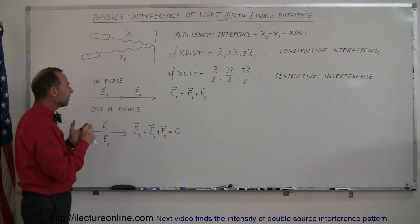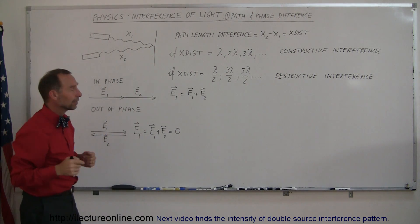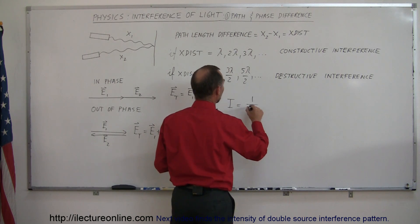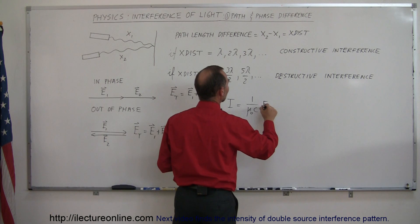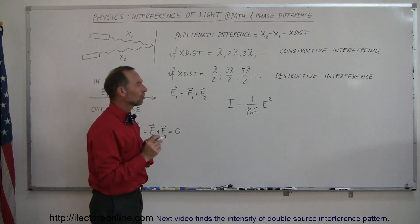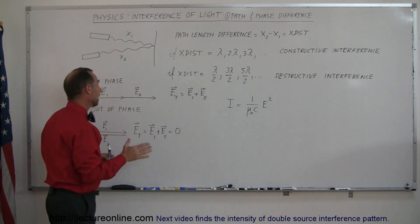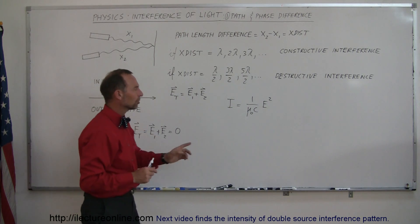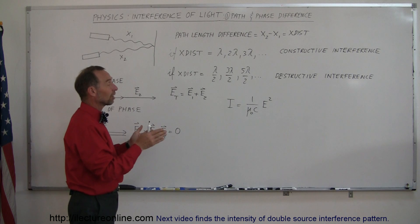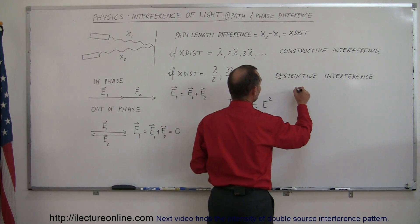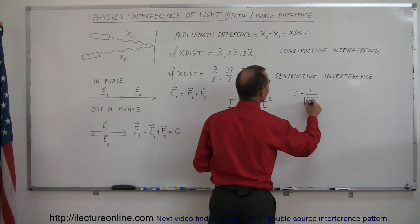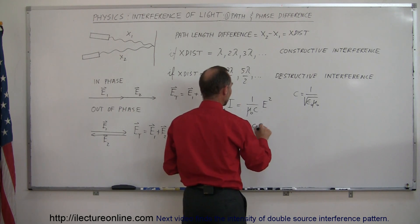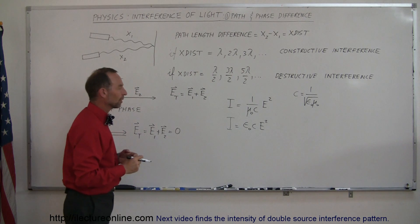So how do we find the intensity of the two beams as they come together? The intensity of light is equal to the magnitude of the Poynting vector, which can be written as one over μ₀C times the electric field oscillation squared. When we talk about electric field oscillations here, we use the average or RMS value of the electric field oscillations. Another way to write that equation, recognizing that C equals one over the square root of ε₀μ₀, is I equals ε₀C times E squared. Either form is the correct way of expressing the intensity of light.